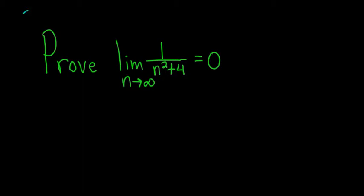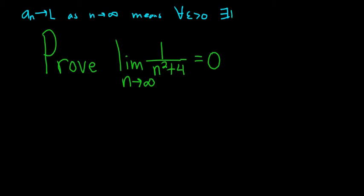Recall that we say a sequence a sub n converges to L as n approaches infinity. This means that for every epsilon greater than 0, we can find some positive integer — that's what the backwards E means — a capital N in the set of positive integers, such that for all little n bigger than capital N, the distance between a sub n and L can be made arbitrarily small, so it's less than epsilon.